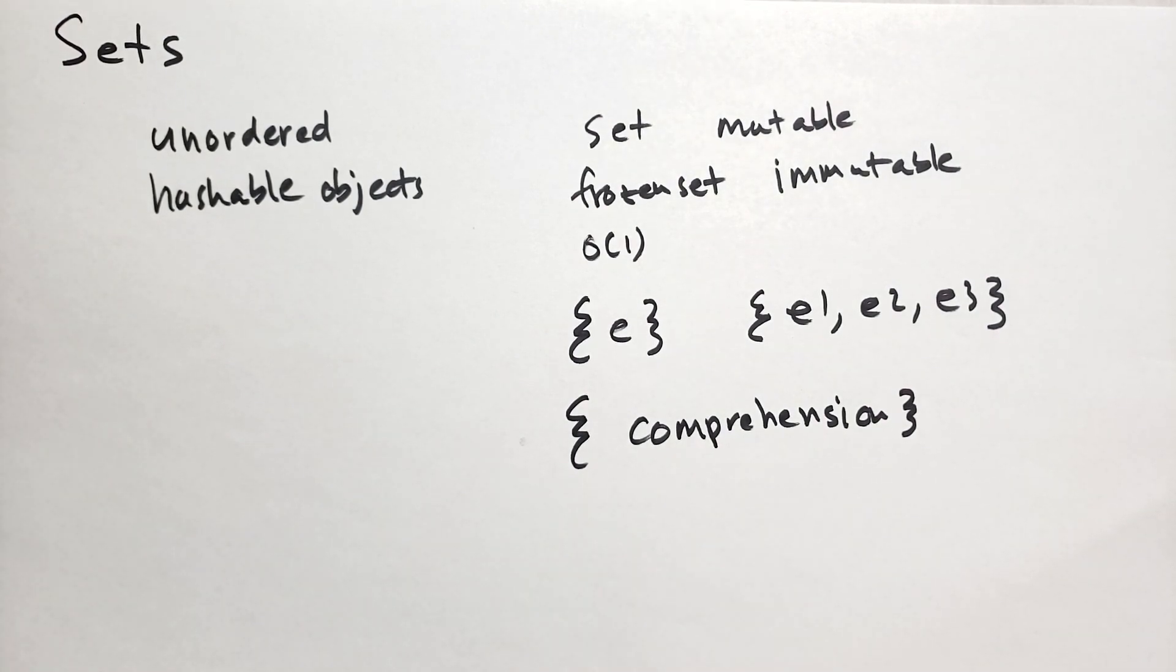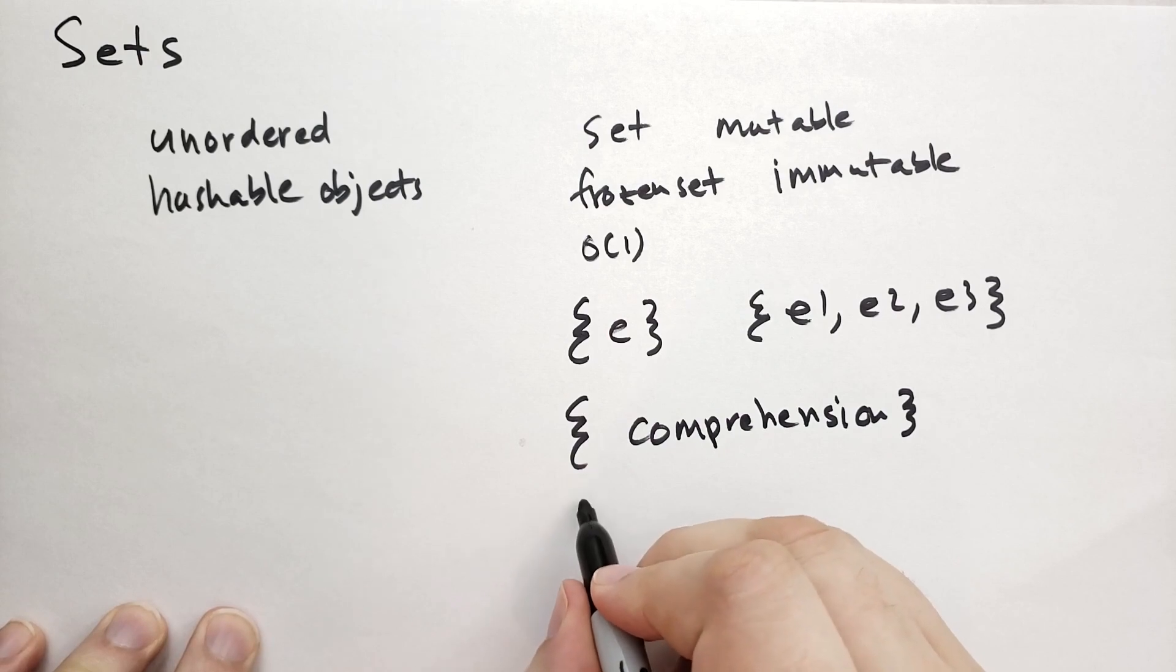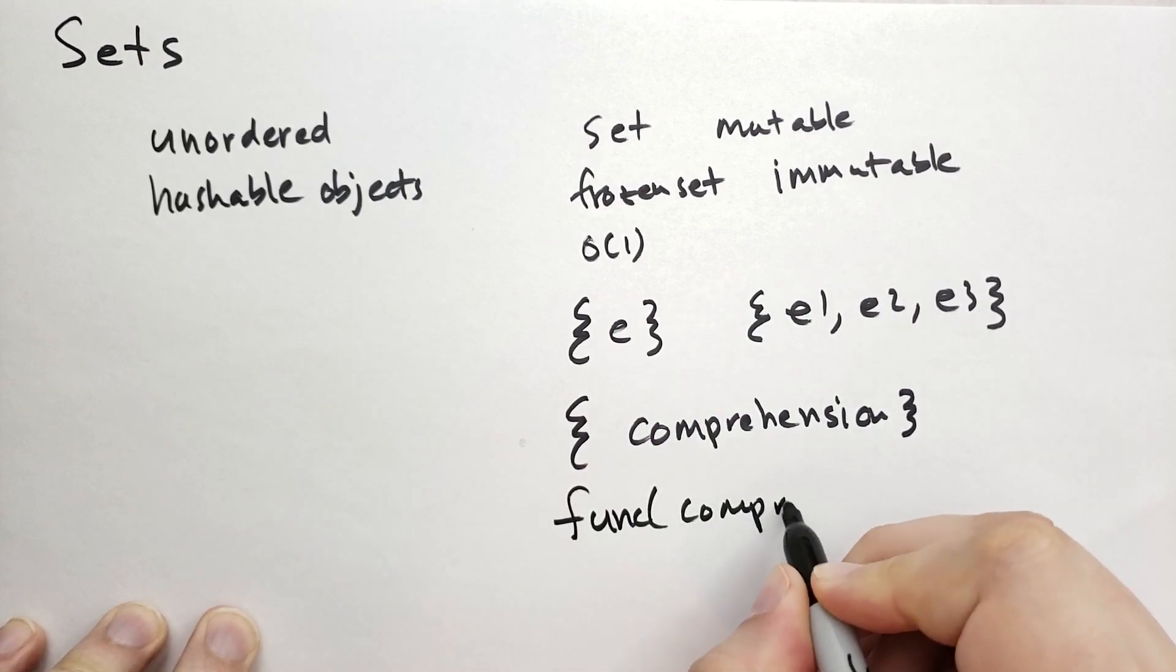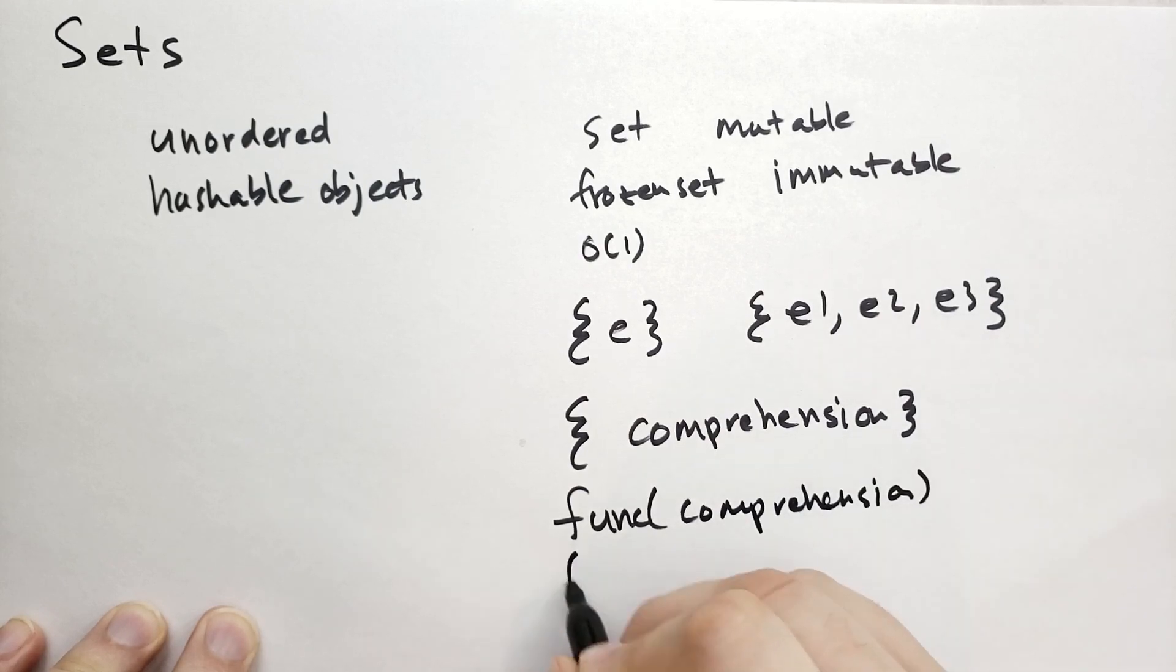Now that you have the set comprehension, we now have all of the comprehensions you can have in Python 3.7. So you can have a function call comprehension. You can have a generator expression, this is a comprehension.